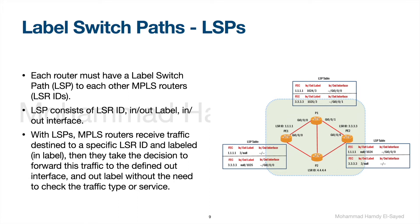The LSP path consists of an LSR ID — this is the LSR ID of the routers existing on the MPLS network — and an in/out label and in/out interface. With LSPs, MPLS routers receive traffic destined to a specific LSR ID and labeled with an in-label. Then they make the decision to forward this traffic to the defined out-interface with the out-label, without the need to check the traffic type or service.